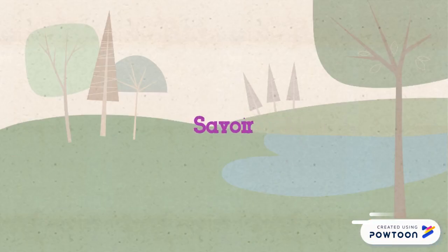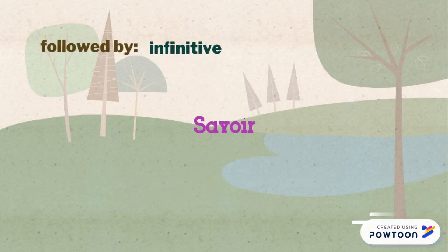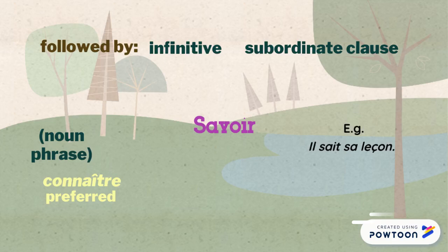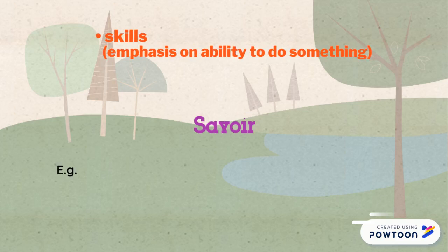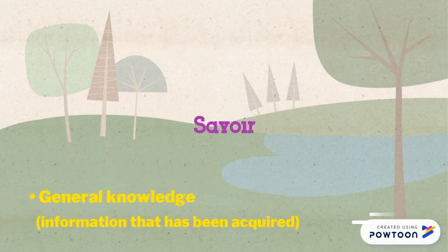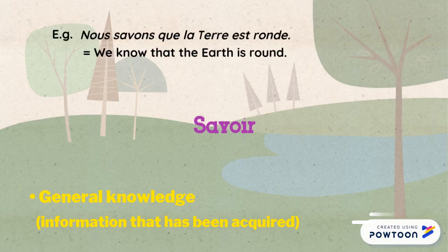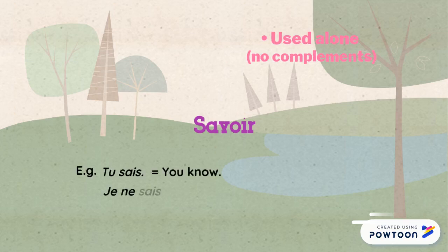Finally, we have savoir. Savoir means 'to know,' sometimes 'to know how to' or 'can.' It is followed by an infinitive, by subordinate clauses, and rarely by a noun phrase — connaître is preferred in that case. For instance, 'il sait sa leçon' or 'il connaît sa leçon' (he knows his lesson). It is used for referring to skills with an emphasis on ability — for example, 'je sais écrire' (I know how to write, I can write) — general knowledge or acquired information, for instance, 'nous savons que la terre est ronde' (we know that the earth is round) — or when used alone with no complement, for example, 'tu sais' (you know), 'je ne sais pas' (I don't know).